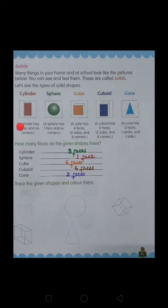This is a cylinder which has 3 faces without corners. A sphere has only 1 face without corners. A cube has 6 faces, 12 sides and 8 corners.